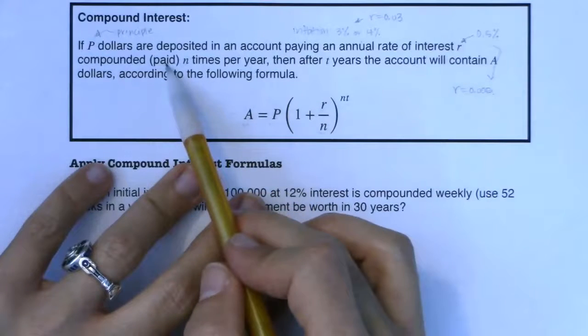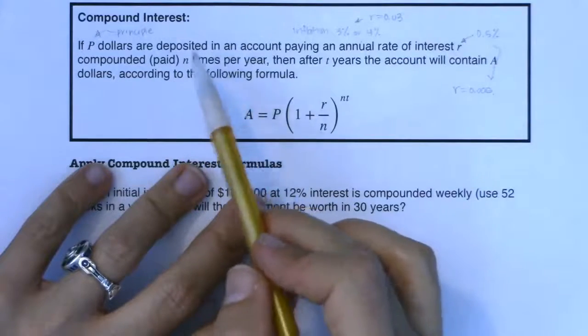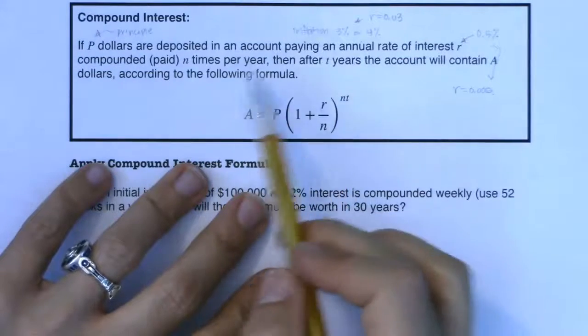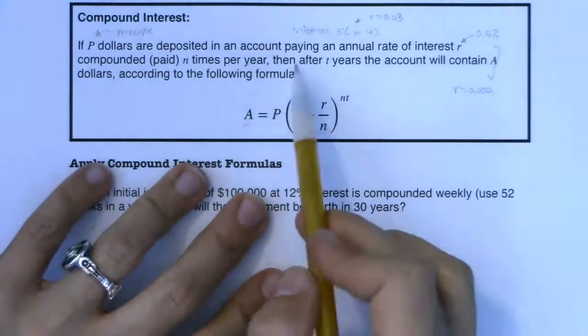And the more often you can compound interest, the more often you get paid in your interest, the better for you because you begin to earn interest off of your interest. And that helps out with exponential growth that contributes to it.